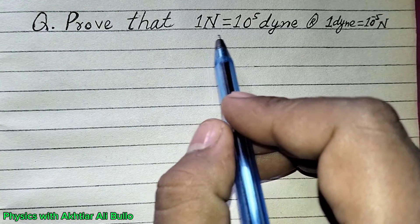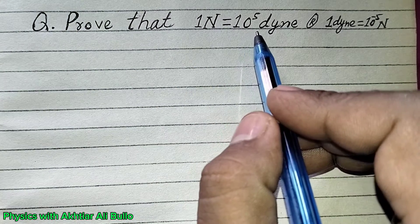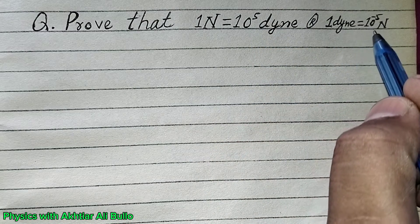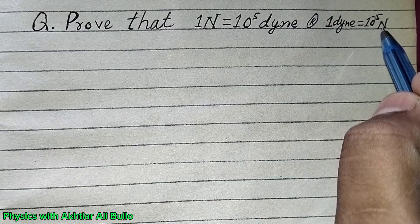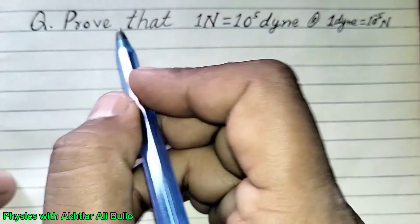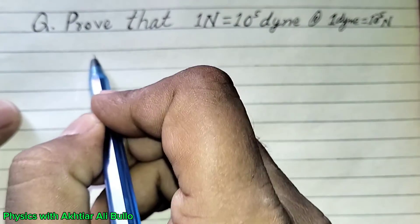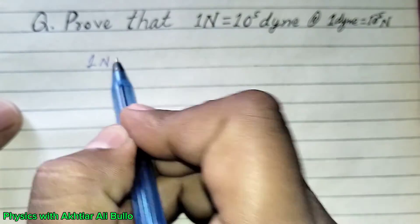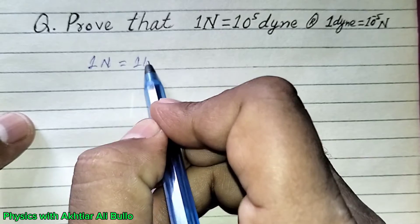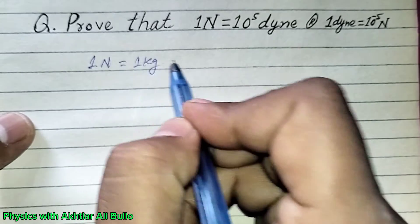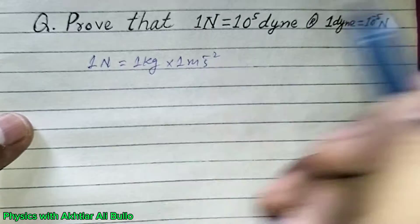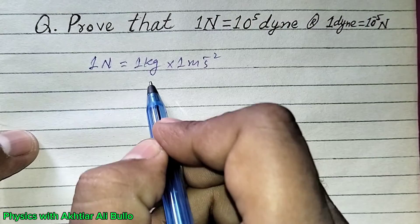Proof that 1 newton is equal to 10 raised to the power 5 dyne, or 1 dyne is equal to 10 raised to the power minus 5 newton. We know that 1 newton is equal to 1 kilogram into 1 meter per second square.